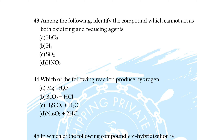Question number 41: which is used as a hydrogen generator — option A: NaH, B: HI, C: S₆S₃, option D: none of these. Question 42: which pair does not show hydrogen isotopes — option A: ortho hydrogen and para hydrogen, B: protium and deuterium, C: deuterium and tritium, option D: tritium and protium?